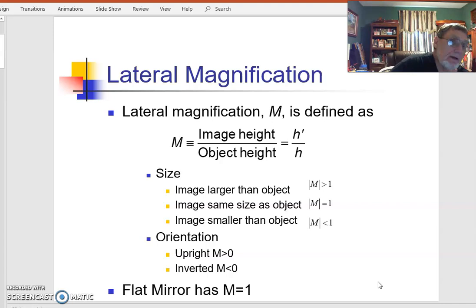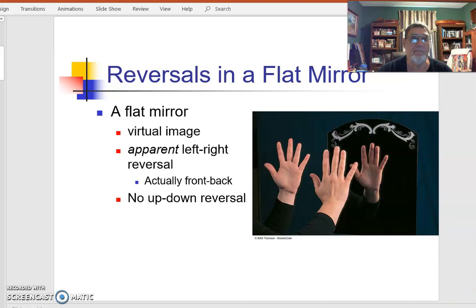So that when M's bigger than 1, that means the image was bigger. If M's less than 1, it's smaller. If M's positive, it means it's above the line, the same as the object. If it's negative, it means it's below the line or it's inverted. So M tells us quite a bit about our image. And there again, we have our left-right reversal for image reflection.